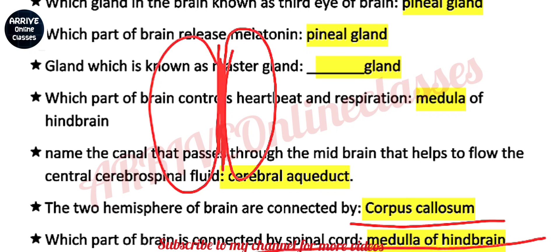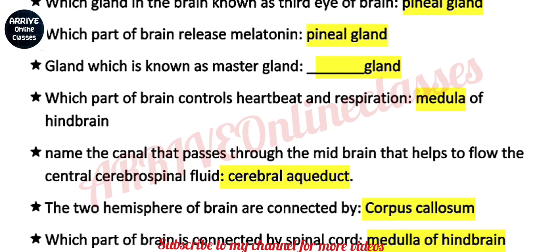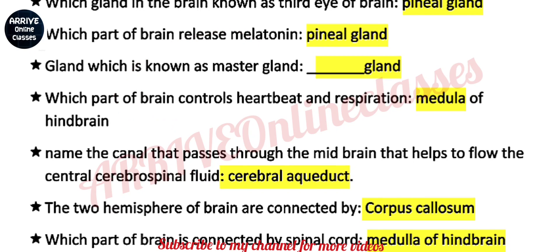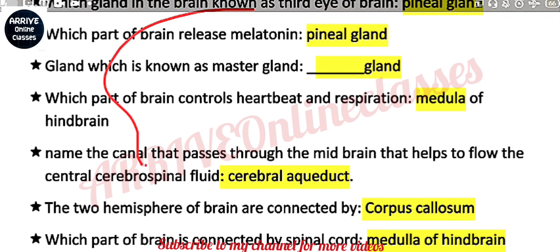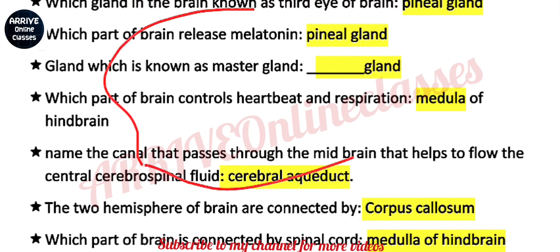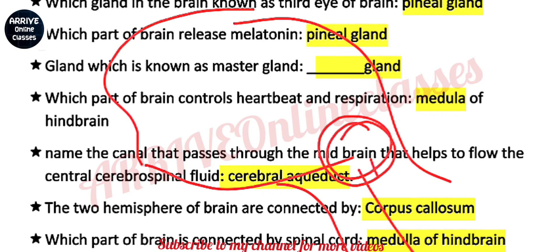Which part of brain is connected to the spinal cord? The answer is the medulla, because the medulla is the last part of the brain and it is directly attached to the spinal cord.